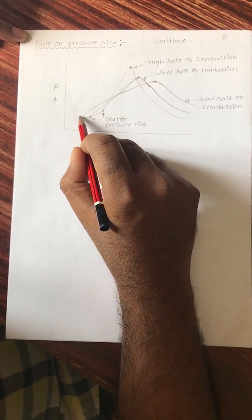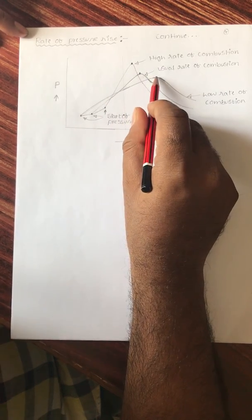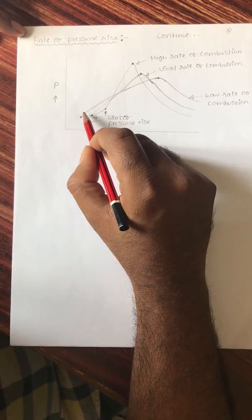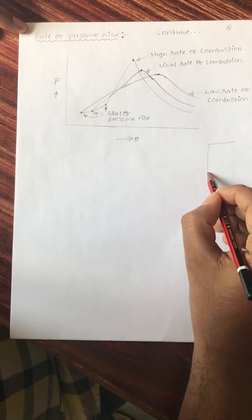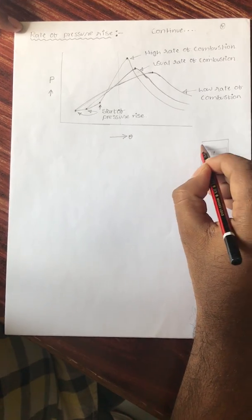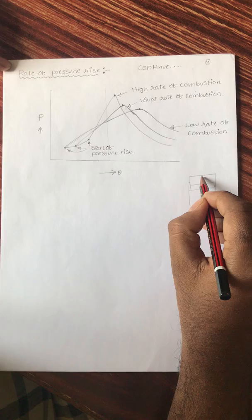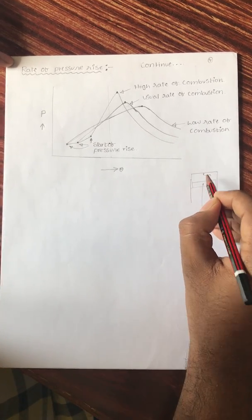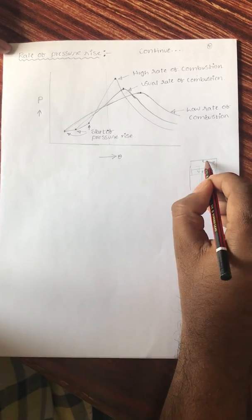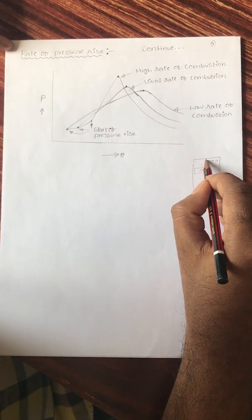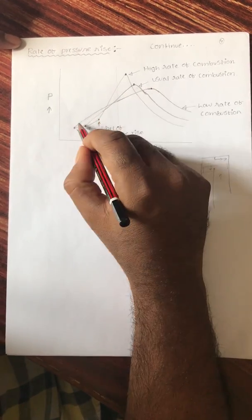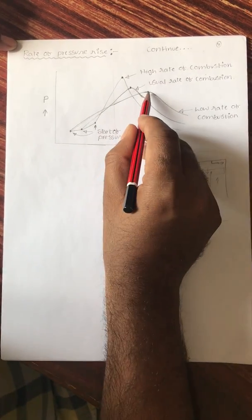With a low combustion rate, the combustion process from start of spark to peak pressure takes longer because flame travel speed is very slow. Considering the engine cylinder arrangement, the flame starts before the piston reaches top dead center, continues moving as the piston reaches TDC, and the piston has already started moving down in the expansion stroke before the flame reaches the end portion.